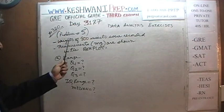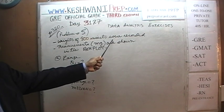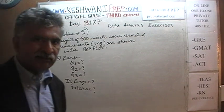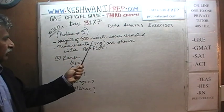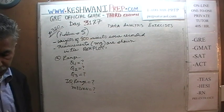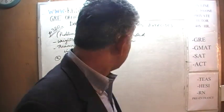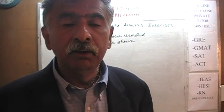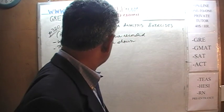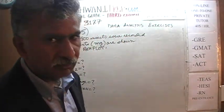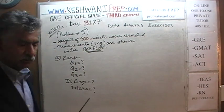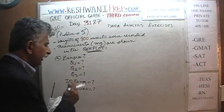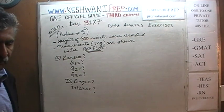Turn to page number 320 and read the problem to yourself. It says that the weights of 800 insects were recorded — some scientist measured the weights of 800 insects. The measurements are shown in the box plot. The weights were measured in milligrams, though we don't really care about the units. We have to figure out what the range is of the 800 observations based on the box plot.